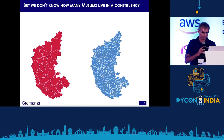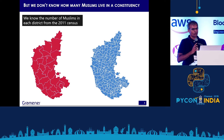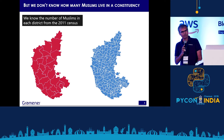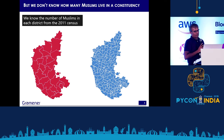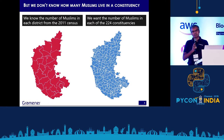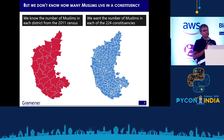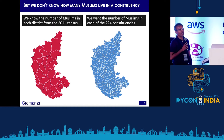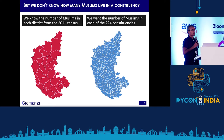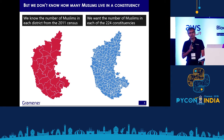Here we have a problem. The proportion of population by religion is available only at the district level or the village level, depending on where you get the data from — and this is from the census. Unfortunately, elections are not conducted by district; elections are conducted by constituency. These are two very different maps. I have data in one map showing how many Muslims exist in a particular region, and I want to see how many Muslims live in a different region on another map. Even though they overlap, there is really no direct way of getting the data from one layer onto the other. So we literally don't know how many Muslims live in a constituency.